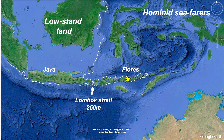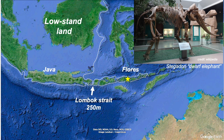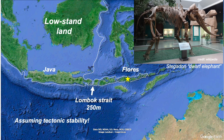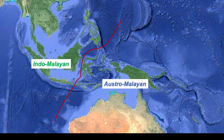Hominids weren't the only seafarers, though. The ancestors of dwarf elephants, among other megafauna, were also able to swim across the Lombok Strait. A pinch of salt, though: this is an analysis that assumes the floor of the Lombok Strait has not subsided tectonically in the meantime, so its depth below sea level applies to those ancient times. Because tectonics is fundamental in explaining diversity in major faunal groups.